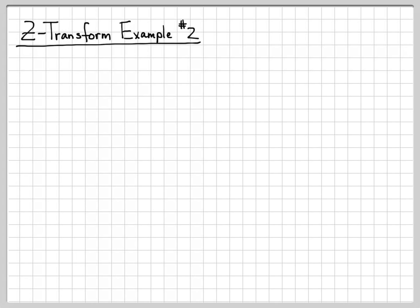This example is a little bit more complicated than the first example we worked because this is a signal that has an infinite number of non-zero samples. So the signal we're going to deal with here is X of K equals alpha to the K times the unit step U of K.